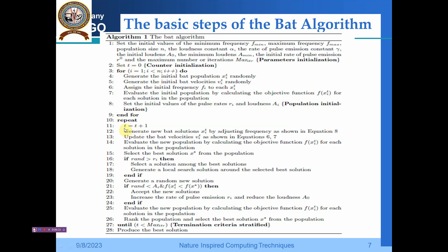We generate new bat solutions x_i(t) by adjusting frequencies, as shown in Equation 8, and update the bat velocities v_i, also represented in Equations 6 and 7. Then evaluate the new population by calculating the objective function f(x_i). These things are done in our algorithm automatically. Then we select the best solution x* from the population.